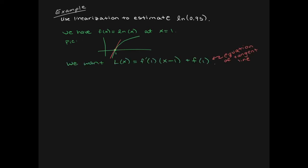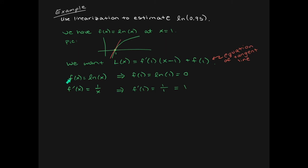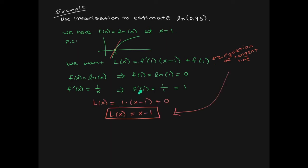We need to find the equation of the tangent line. The slope is the derivative with x equals 1 plugged in, and the point on the line is 1 comma f of 1. Our f of x is ln x, so the first derivative is 1 over x. Plugging in x equals 1 into the function gives ln of 1, which is 0 — that's the whole reason we picked x equals 1. f prime of 1 is 1 over 1, which equals 1. So the slope is 1 and the point on the line is 1 comma 0.